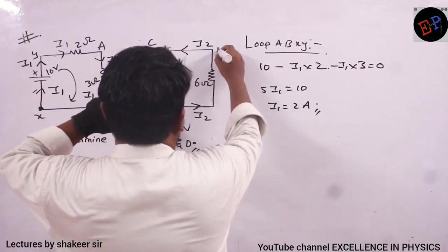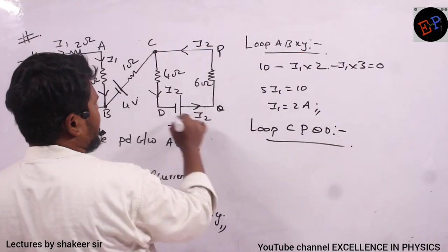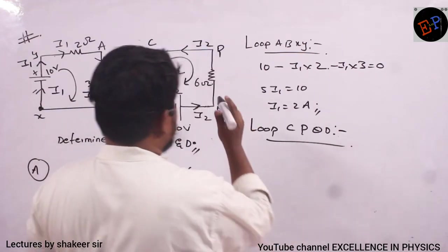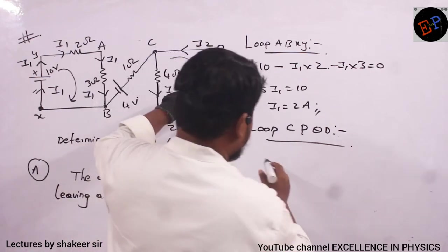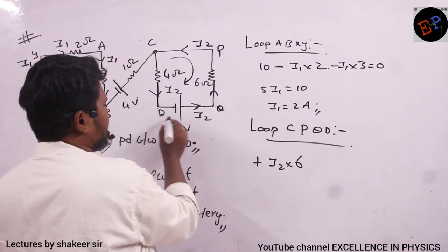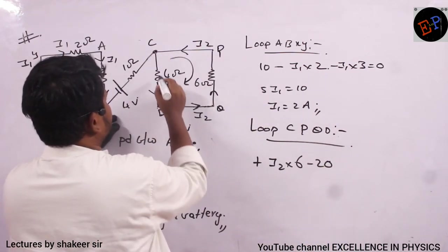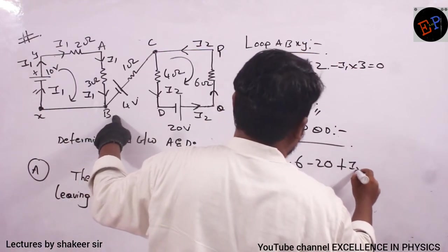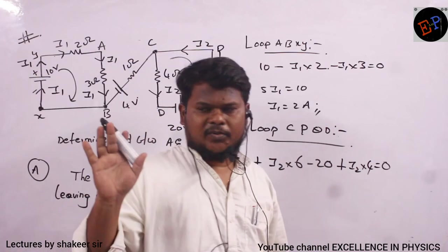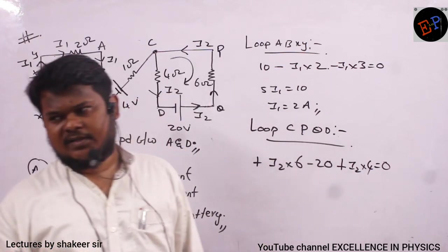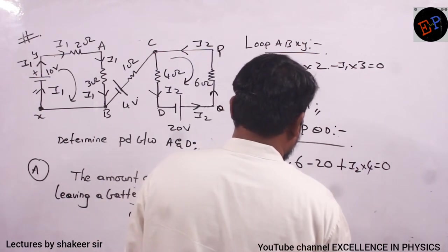For loop CPqD — starting from C, travelling to P (no component), P to Q through resistor — travelling towards higher potential, +I2×6. Q to D through 20V battery — travelling towards lower potential, −20. D to C — travelling towards higher potential, +I2×4. Total: 6I2 − 20 + 4I2 = 0, so 10I2 = 20, giving I2 = 2 amperes.